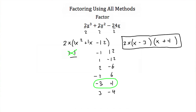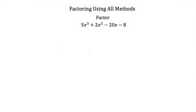Let's look at one more example: 5x cubed plus 2x squared minus 20x minus 8. The first step is to look for a greatest common factor. Not every term is divisible by the same number — I can't divide 5 by 2, and they don't all have variables — so there is no greatest common factor. Next we'd look for perfect square trinomials or difference of squares, but this has 4 terms. Since we do have more than three terms, we would try factoring by grouping.